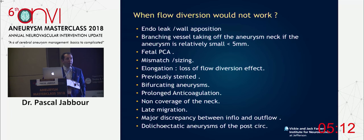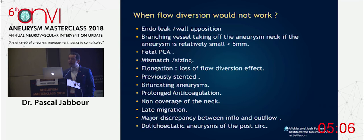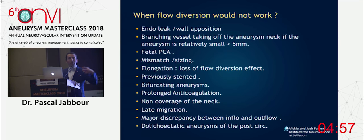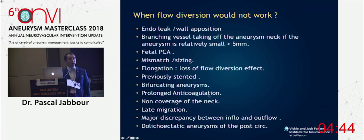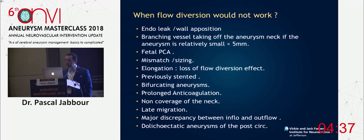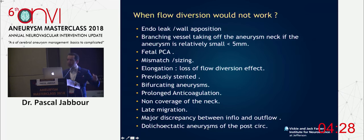Mismatch and sizing of the pipeline is important. Elongation is very important — if you oversize the pipeline, you're going to lose the flow diverter effect. Previously stented aneurysms, bifurcating aneurysms, prolonged anticoagulation — we're seeing less occlusion in patients with AF on anticoagulation. Non-coverage of the neck, late migration, and dolicoectatic giant aneurysms are further limitations.